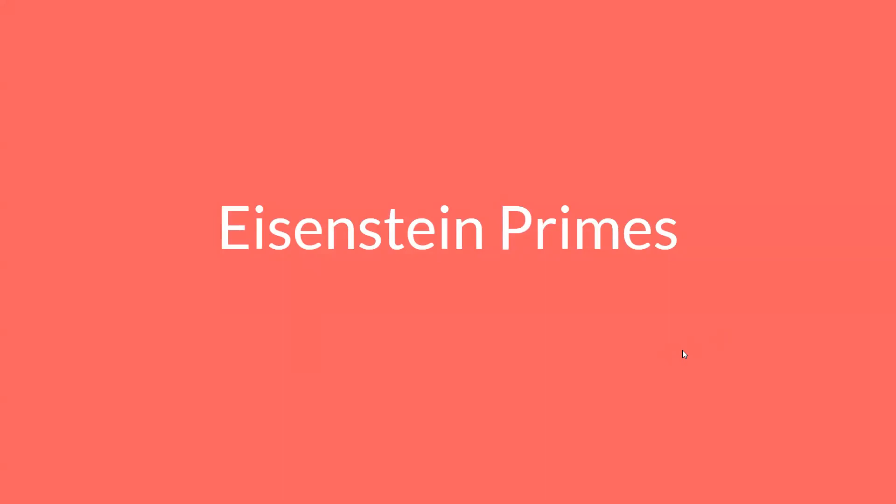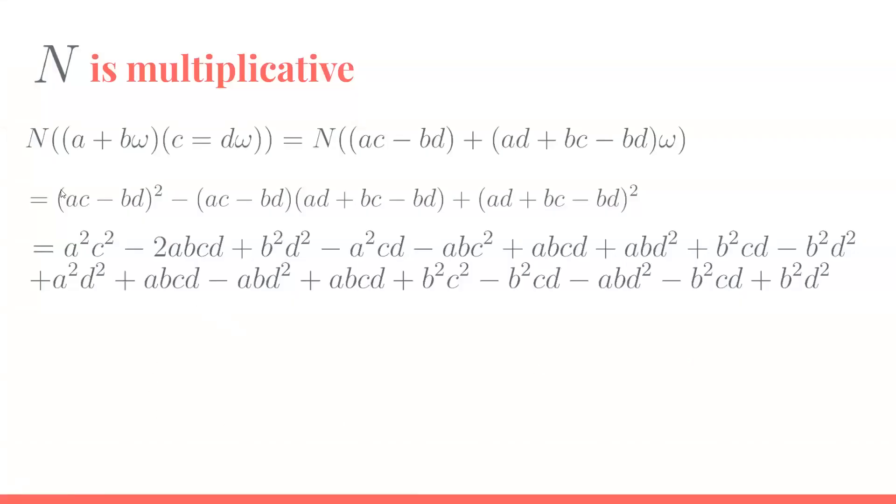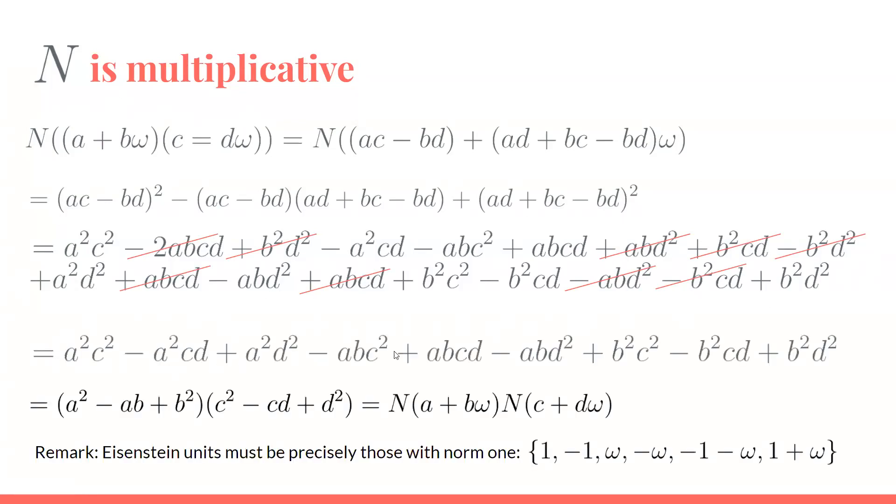The first thing to do is we're going to quickly show that N is multiplicative. We have the norm of the product of two numbers, and we want to show that this is equal to the norm of this one times the norm of this one. If we just expand it out, this is what the product of the two integers looks like. If we keep expanding this all the way out, we get this kind of ugly answer, but we can cancel out a lot of like terms. That ends us up with this slightly nicer term that ends up reducing to this product here, which is the norm of a + bω times the norm of c + dω.